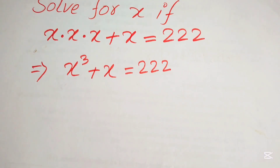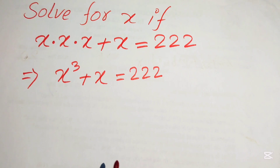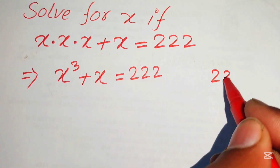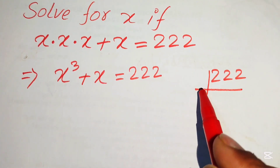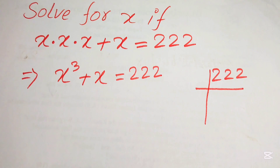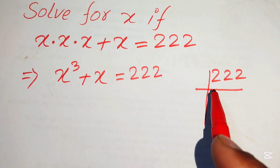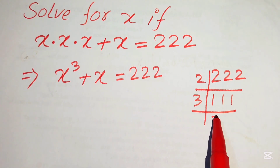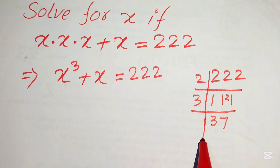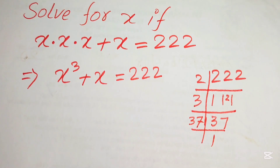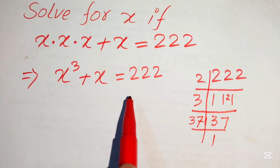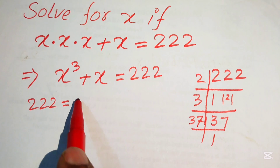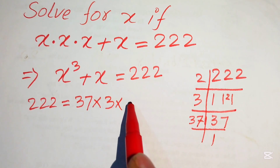We focus on the right-hand side, which is 222, and find its prime factors using the division method. We divide by 2, then by 3, then by 37. So 222 equals 37 multiplied by 3 multiplied by 2.